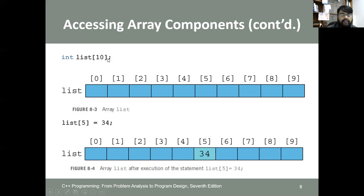For example, declaring an integer array named 'list' with 10 components gives elements at positions 0 through 9. If you put the value 34 into the sixth element at position 5, it is stored there. Similarly, you can put values into the fourth, sixth, and seventh components. For instance, if position 3 has value 10 and position 5 has value 35, then position 5 can be assigned their sum, which is 45.